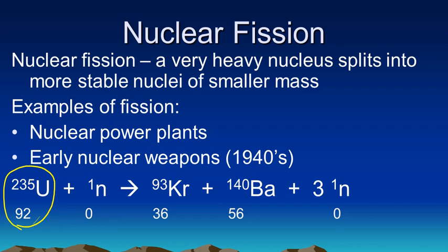Notice that uranium-235 does not undergo fission, generally speaking, just by itself. We have to hit it with a neutron. That's what this is. 1 over 0 n is a neutron.